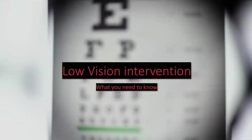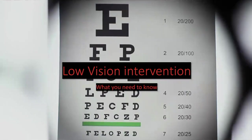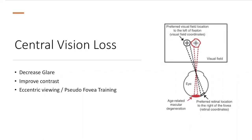What you need to know on each low vision condition, such as central and peripheral vision. For central vision loss, we need to decrease glare, improve contrast, and use eccentric viewing. Eccentric viewing is used by the patient to compensate for central vision loss by turning the head and body to use peripheral vision. Here is an example of peripheral vision field location to the left of fixation, showing exactly how it happens.